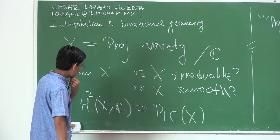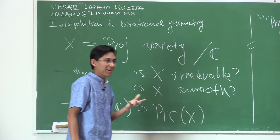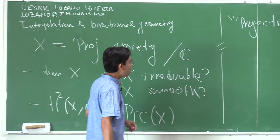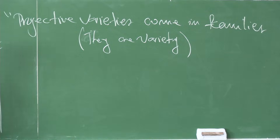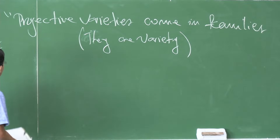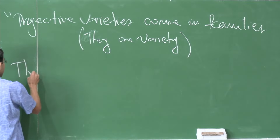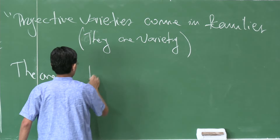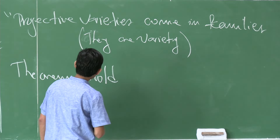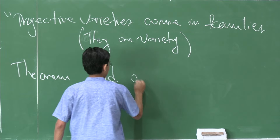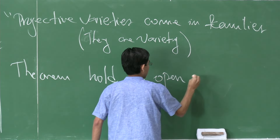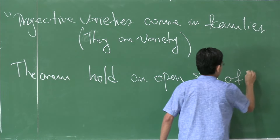Points on the plane don't have a lot of invariants, but when we think of their families, things get very interesting. And once we have families, there are theorems that hold for open sets — big chunks of the family. Let me give you two important examples of this type of theorem.